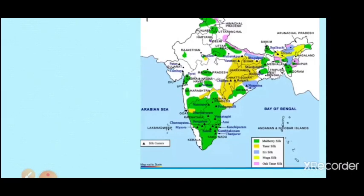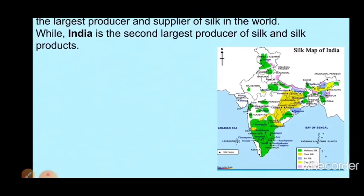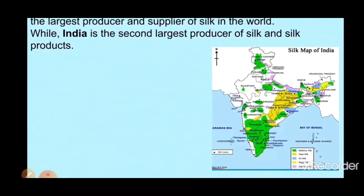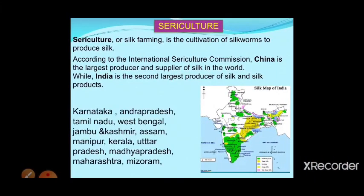These different types of silk are produced in different places, and the silk fabric is named accordingly — for example, Moga silk and Mulberry silk are named after the region or the plant associated with their production. Karnataka is the highest producer of silk in India.